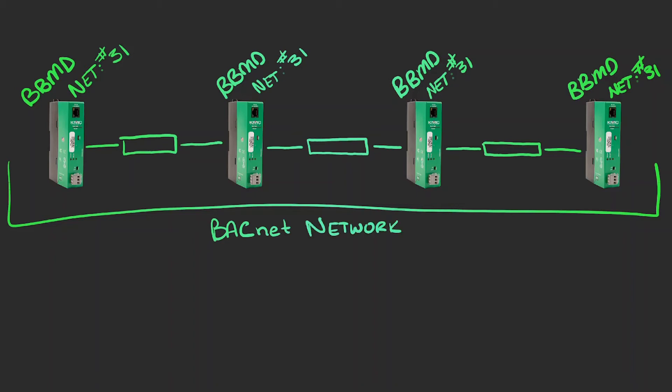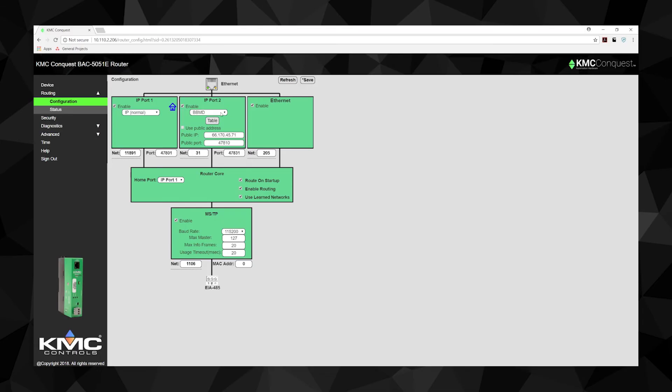Since BBMDs tunnel broadcast messages as unicast messages, they communicate point-to-point with other BBMDs. When configuring a BBMD, you must create a table of all the other router BBMDs you want to be aware of.